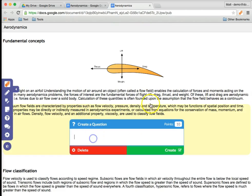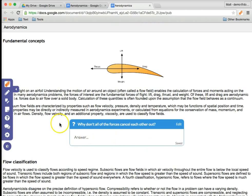So I'm going to add it in right here, and my question is going to be: why don't all the forces cancel each other out? And now I can go ahead and change the number of points I want this to be. Let's say this is going to be four points, and click create.